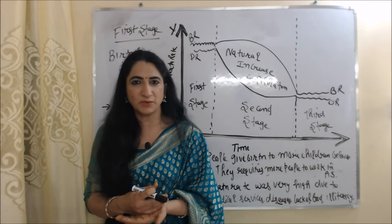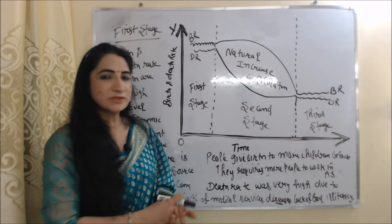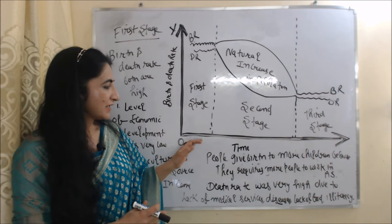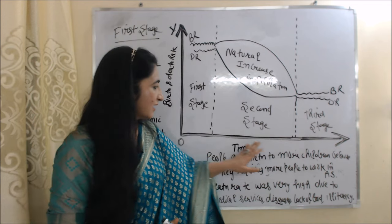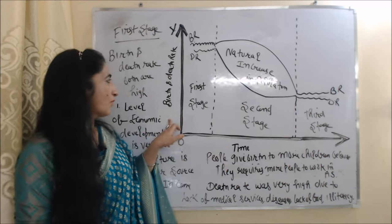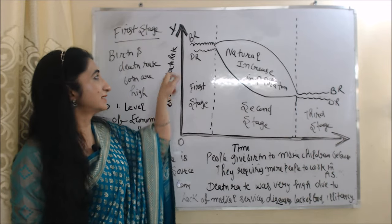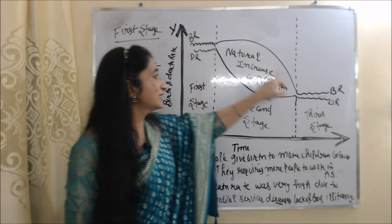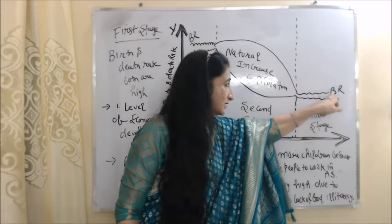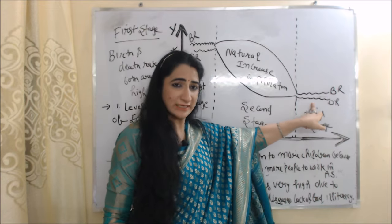This theory is basically divided into three stages. We will discuss each stage with the help of a diagram. In this diagram, the x-axis represents time and the y-axis represents birth and death rate. The BR curve shows birth rate and the DR curve shows death rate.